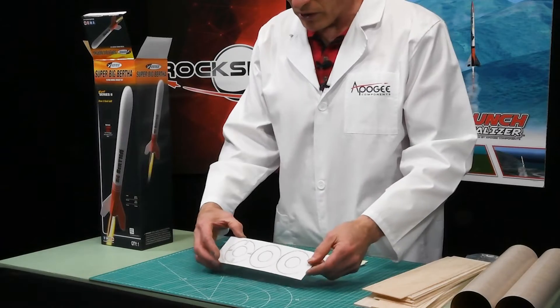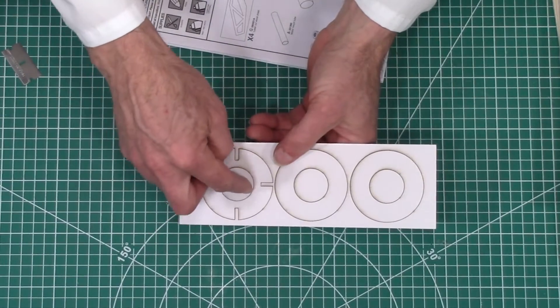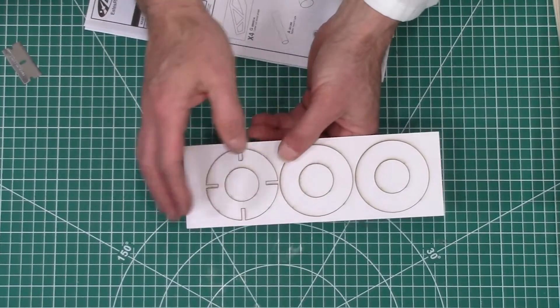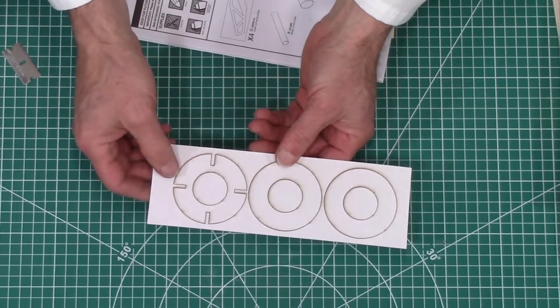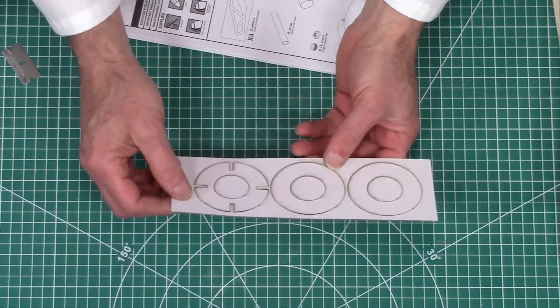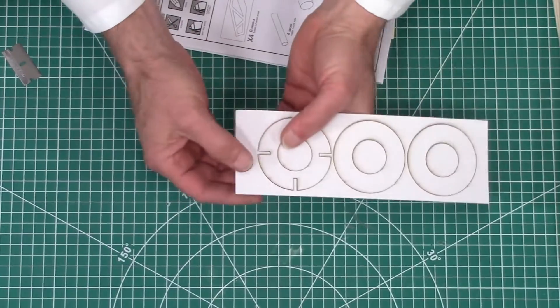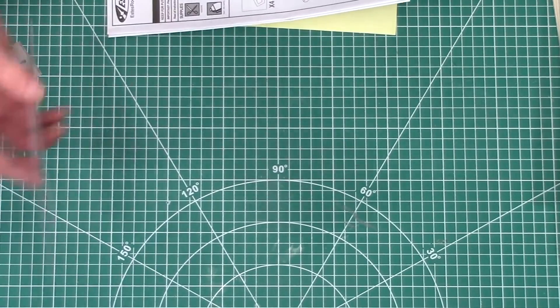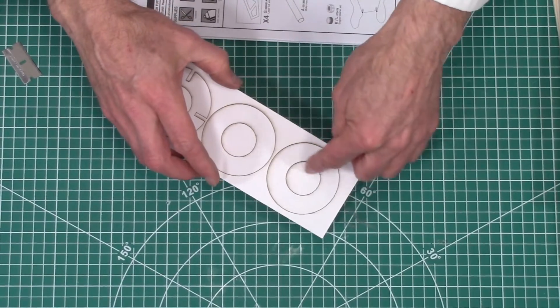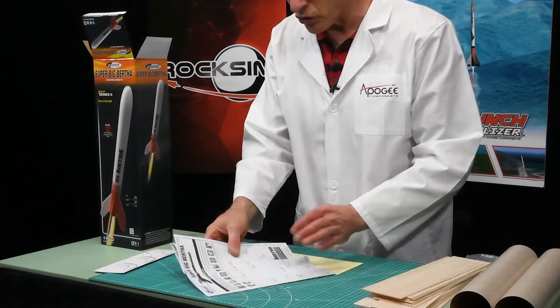All right, we have centering rings, and again, these have slots in them for the fin, through-the-wall fin slots, and then two rings that don't have slots in them. And these are made out of cardboard, and that looks to be like about 0.05 inches thick cardboard. And again, it's got a 29-millimeter engine mount tube.